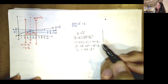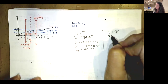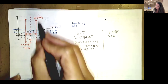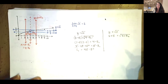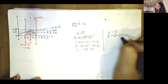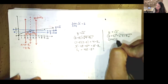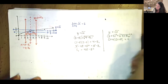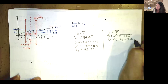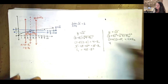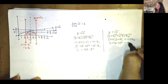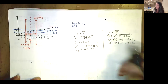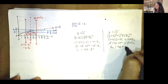We do something similar for delta two. We have y equals the square root of x, and we're interested in y equaling 2 plus epsilon when x equals c plus delta two, so x equals 4 plus delta two. Squaring both sides and multiplying out: 2 times 2 is 4, 2 epsilon plus 2 epsilon is 4 epsilon, and epsilon squared. Subtracting 4 from both sides, delta two equals 4 epsilon plus epsilon squared.